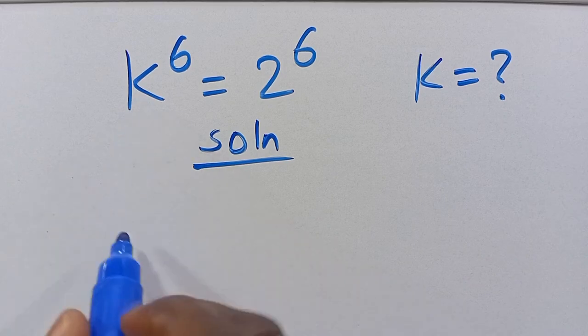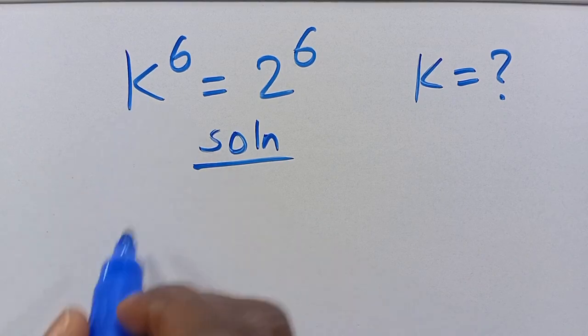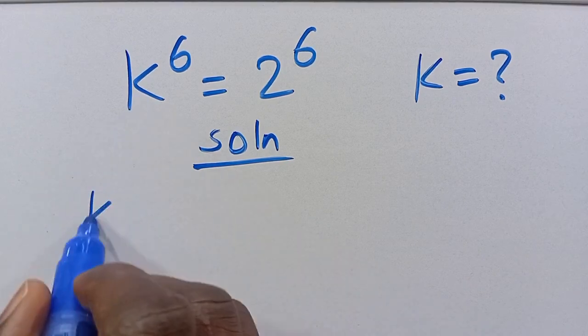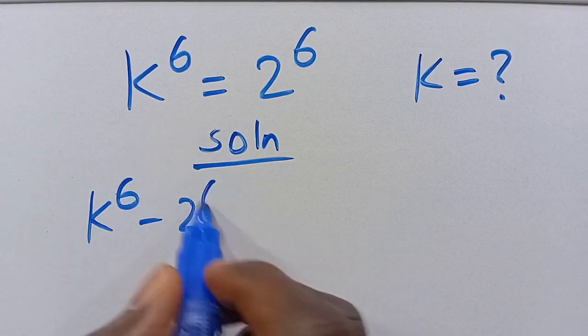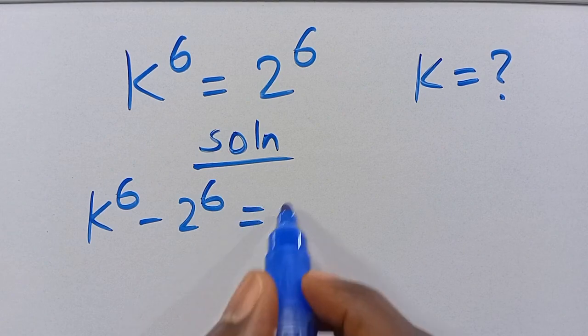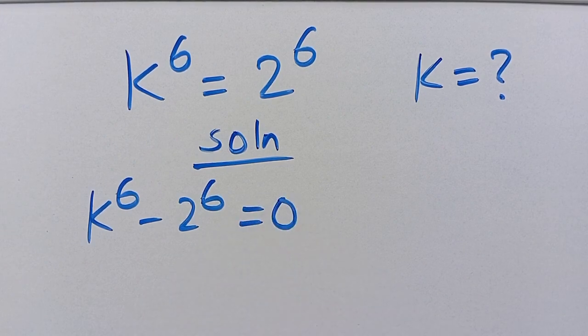Let's have the solution. From here, let's have this as k to the power of 6 minus 2 to the power of 6 equals 0.